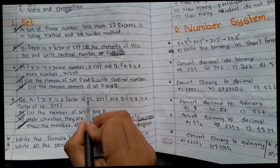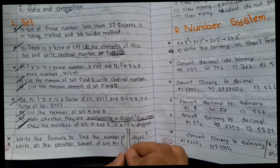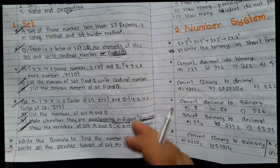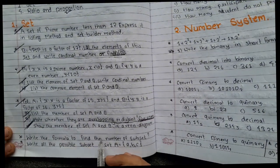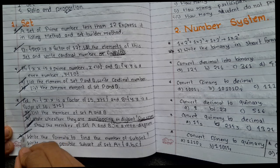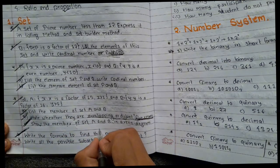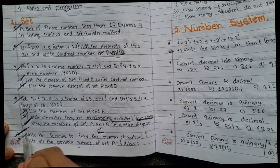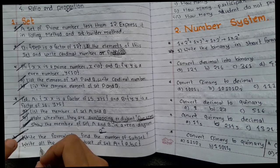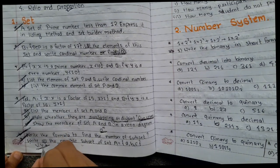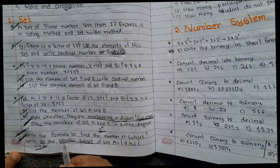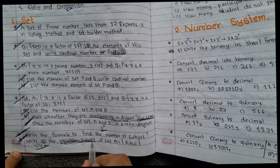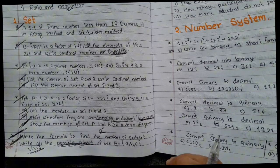This is an important question. Write the formula to find the number of subsets — it is very important. The short question formula to find subsets is 2 to the power n. Write all the possible subsets of set {a, b, c}. This is a very very important question — possible subsets of {a, b, c}.